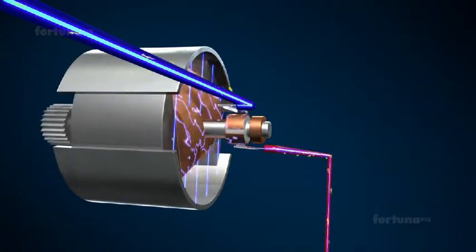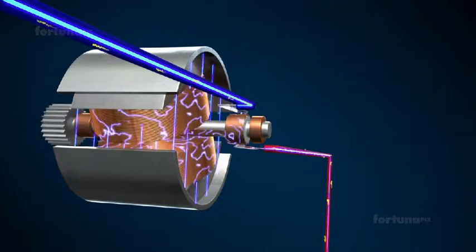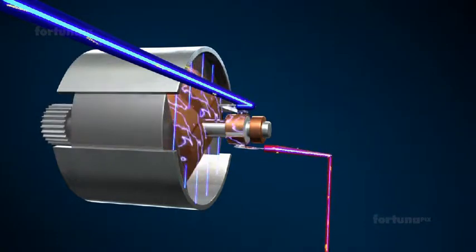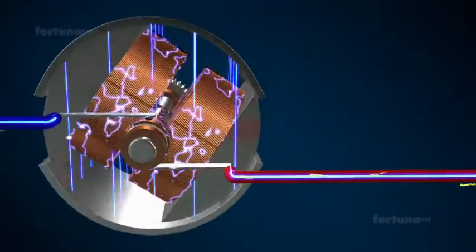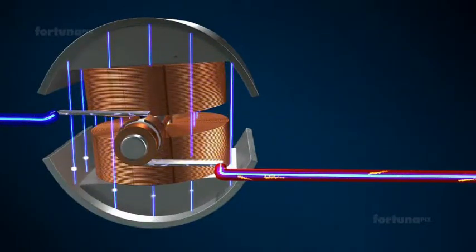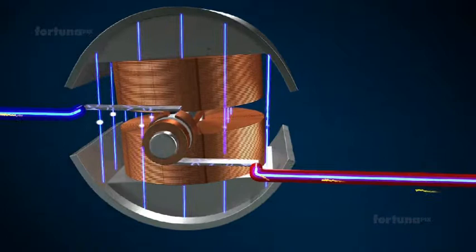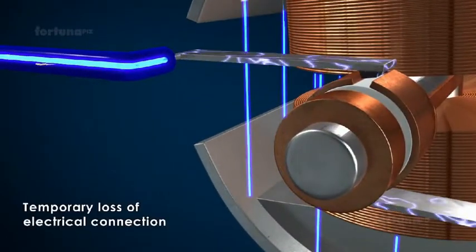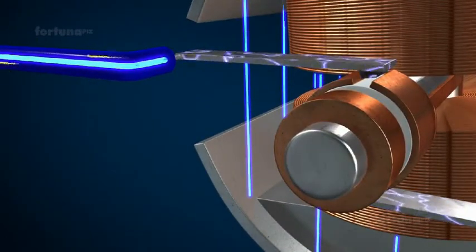As it rotates, it causes the commutators and the shaft to rotate along with it. When the armature's position is perpendicular to the field generated by the horseshoe magnets, there will be a temporary loss of electrical connection between the commutators and brushes.